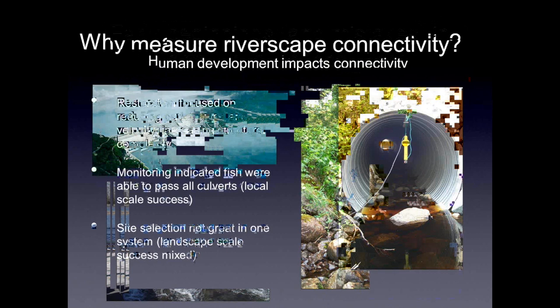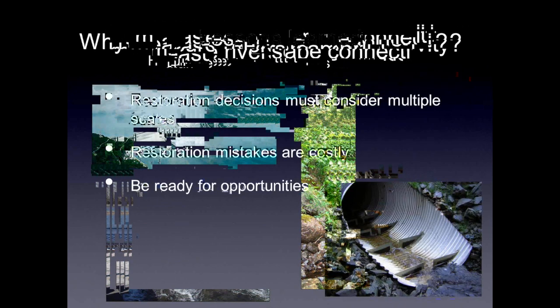But they realized in hindsight — and this is where the early mistakes come in — that the site selection was not necessarily great. In one system, after the fact, they found that while fish could get through the culvert, only a few hundred meters upstream was a very large waterfall which functioned as a natural barrier. So at a landscape scale, that might not have been an optimal place to put dollars into restoring a barrier, and success at that scale was mixed. But it was a worthwhile process in that valuable lessons were learned.